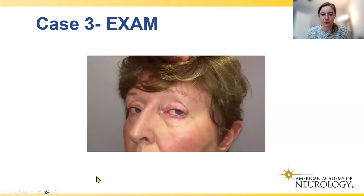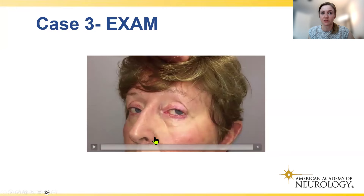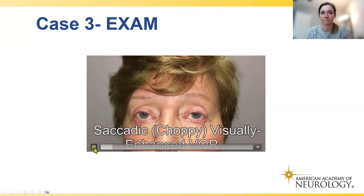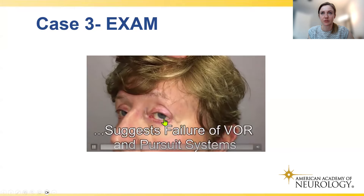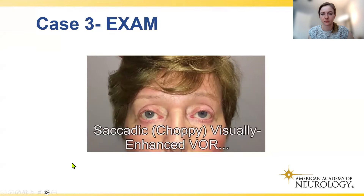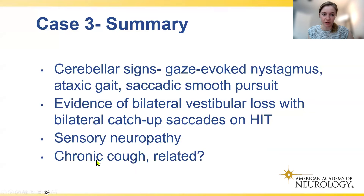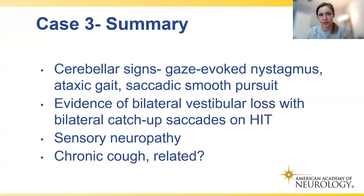The exam video of Case 3 demonstrates a very choppy visually enhanced VOR, showing that both smooth pursuit and the vestibulo-ocular reflex are abnormal, with visible gaze-evoked nystagmus at the extremes of gaze. Summarizing: she had cerebellar signs with gaze-evoked nystagmus, ataxic gait, and saccadic smooth pursuit; evidence of bilateral vestibular loss with bilateral catch-up saccades on head impulse test; sensory neuropathy; and a chronic cough. At this point we consider whether these findings are related.